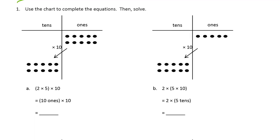We're using charts to complete the equations and then solving. So here's the equation we need. We're looking for two rows of five times ten. So here's the chart. Here's two rows of five ones. And times ten means we're just going to move these. We're just going to change the units from ones to tens.